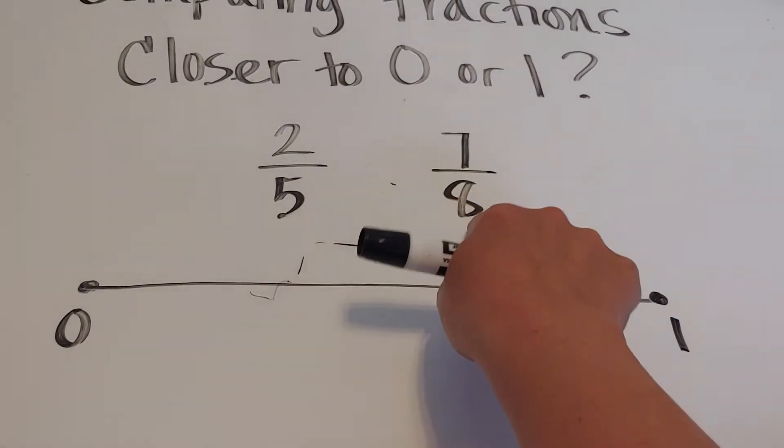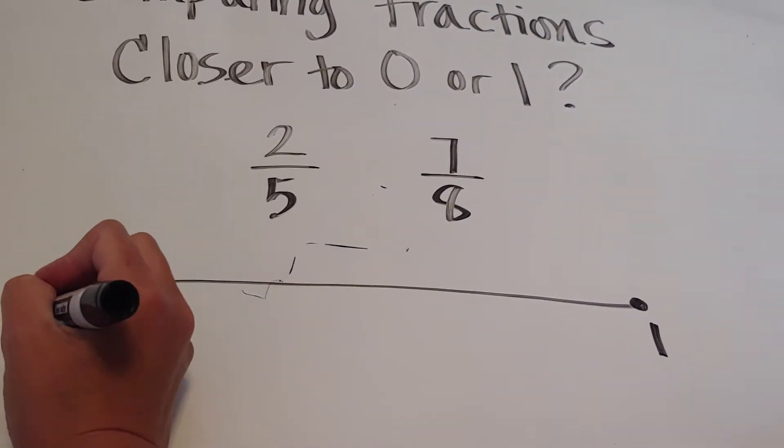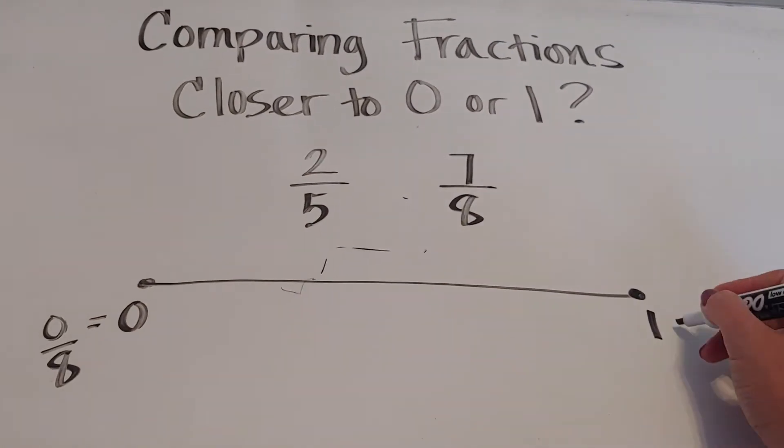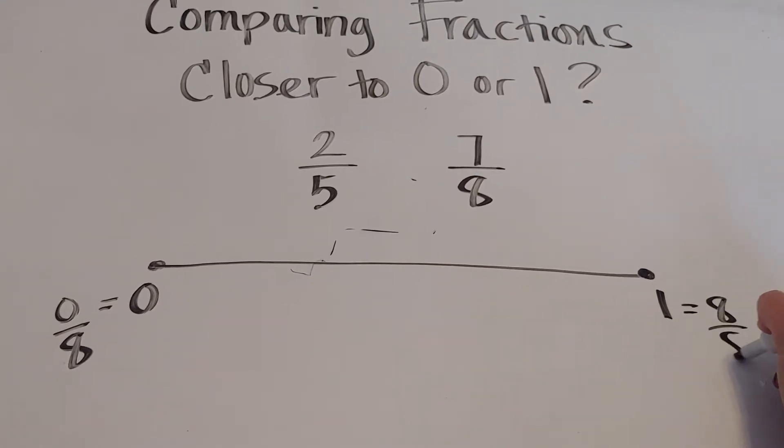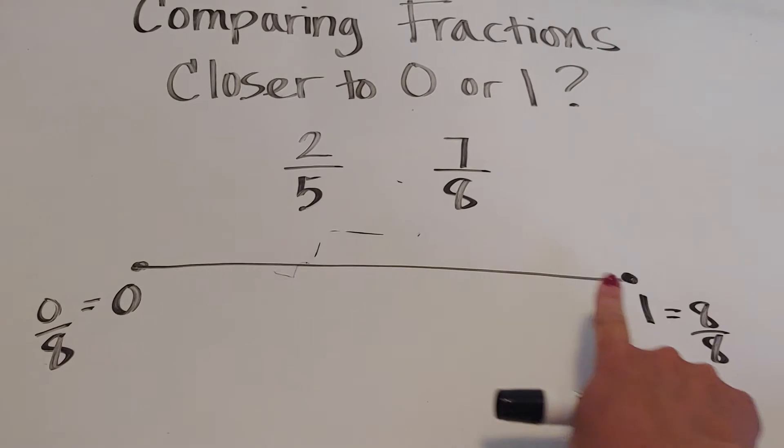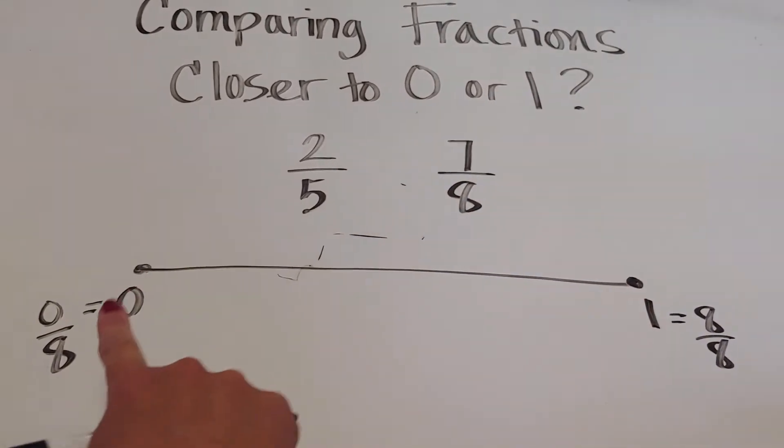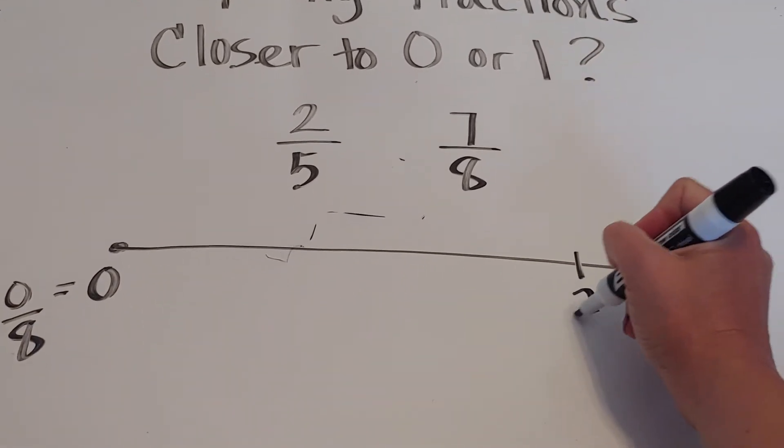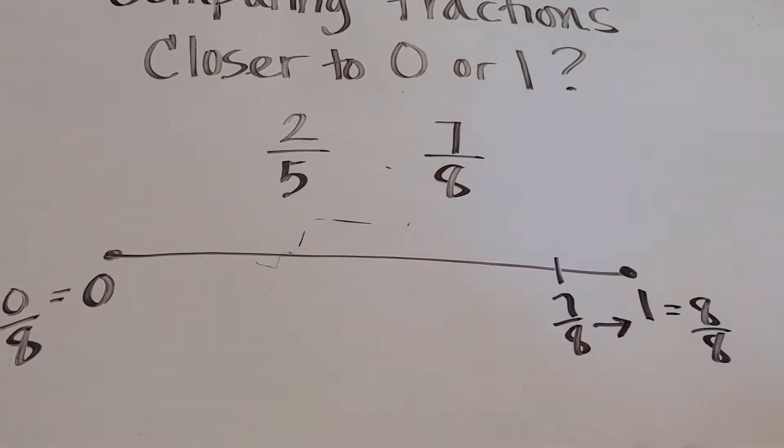If I'm talking about eighths, zero is the same as zero eighths, and one is the same as eight eighths. So is seven eighths closer to one or closer to zero? Seven eighths is closer to one.